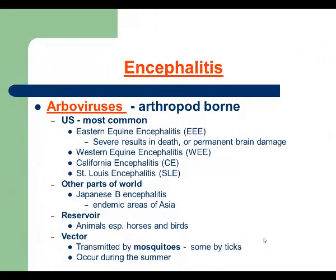We continue with encephalitis, which is inflammation of the brain. The most common cause of encephalitis in the United States is arboviruses. The source of infection is animals — for example, horses or birds — and infection is transmitted by mosquitoes, sometimes by ticks. This explains why outbreaks typically occur in summer and spring, when mosquitoes are active.